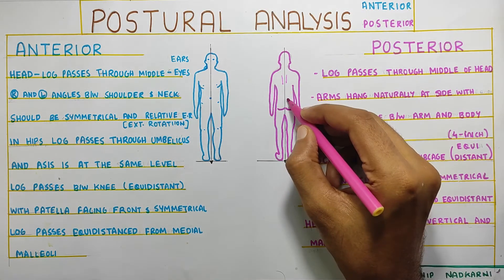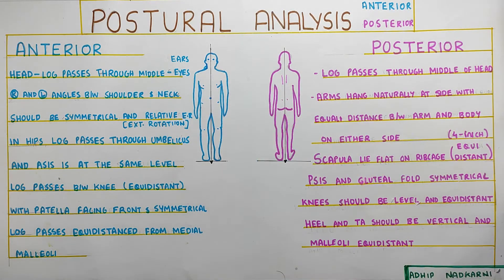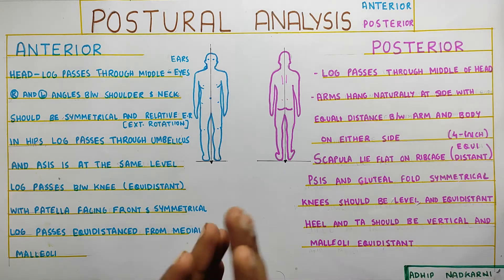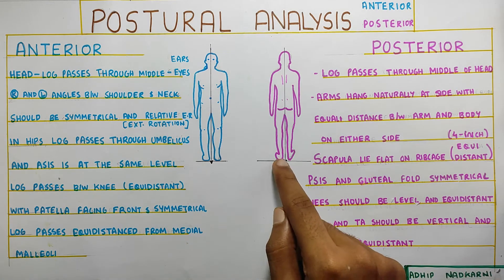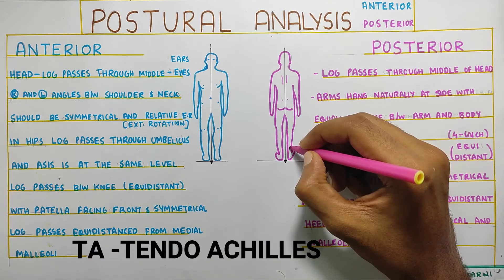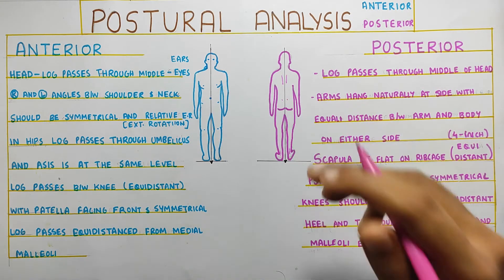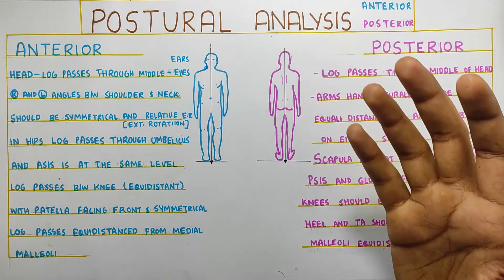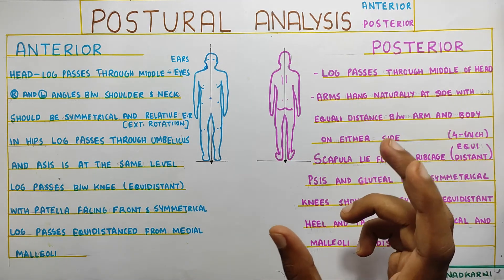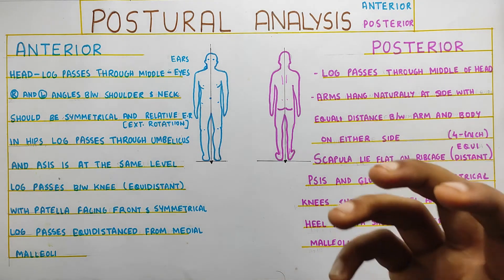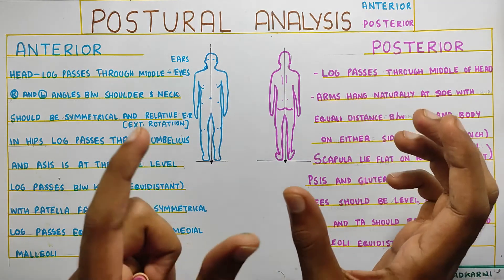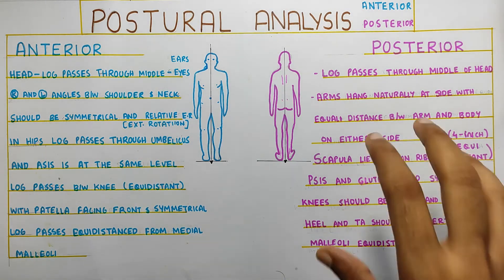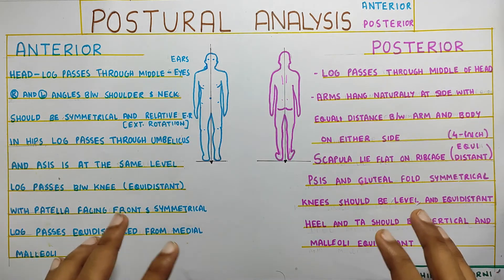The PSIS — the two dimples — should be equally distant, and the gluteal folds have to be symmetrical. Further down, the knees should be equally distant. At the heel, it is interesting to see that the heel is in line with your Achilles tendon, which comes down and inserts into your heel. If the calcaneum is slightly inverted or everted, it means your foot may have lost its arch. We will discuss the pathological findings in detail in the next video.